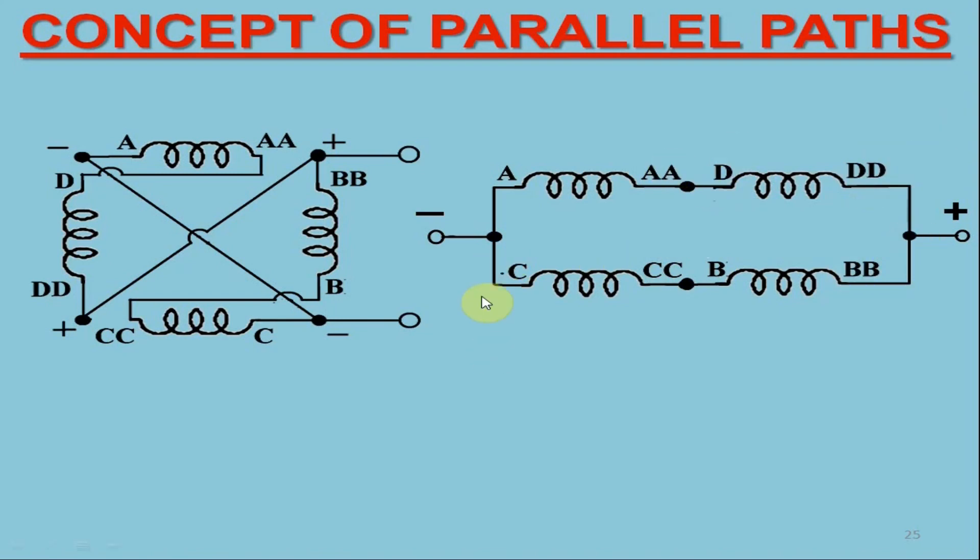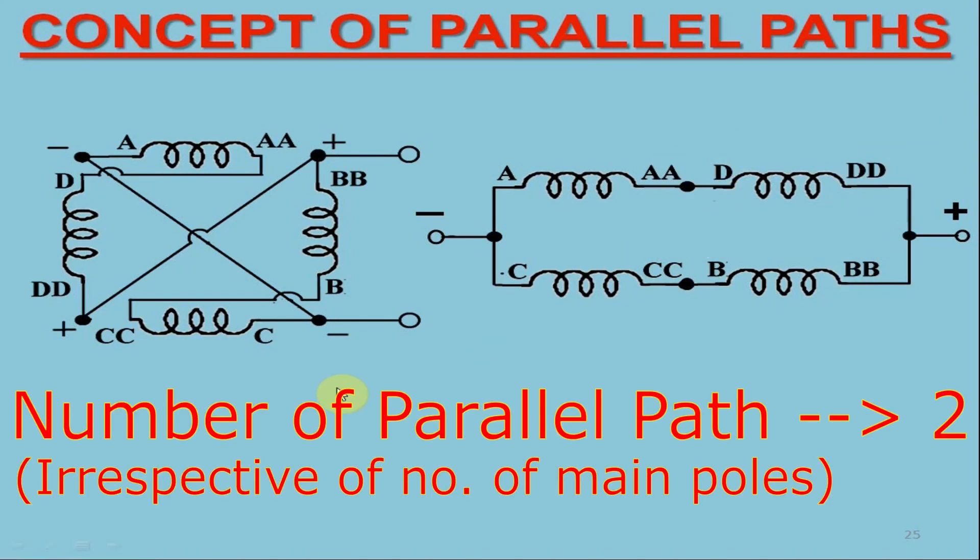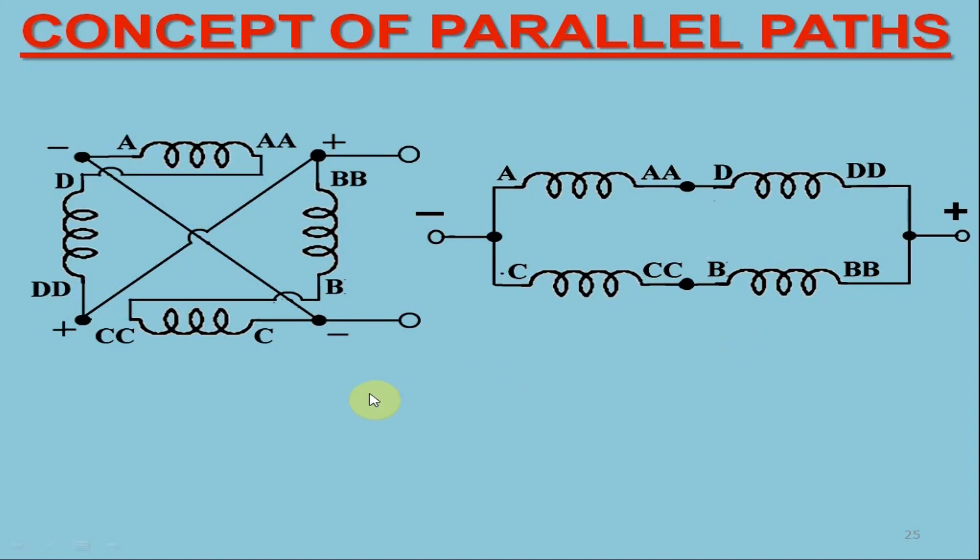So in wave winding case, we may state that the number of parallel paths is always two irrespective of the number of machine poles and each path carry half of the total armature current.